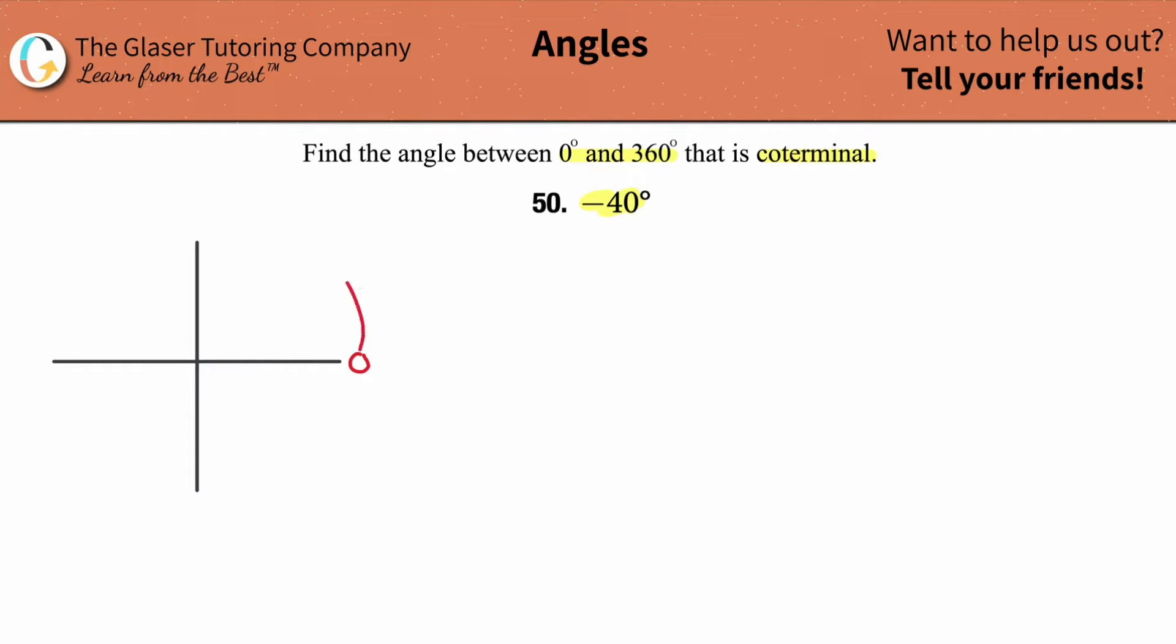So in other words, you probably memorize this as positive 90, and that's great. But now when you rotate counterclockwise, this becomes negative 90. And then guess what this is? Negative 180, and guess what that is? Negative 270.